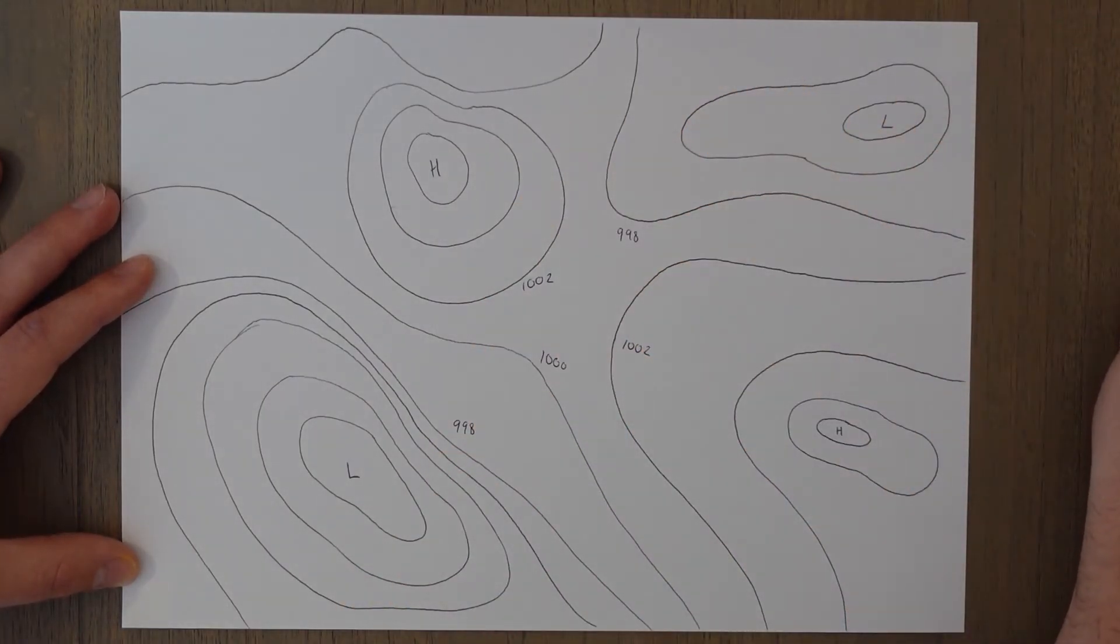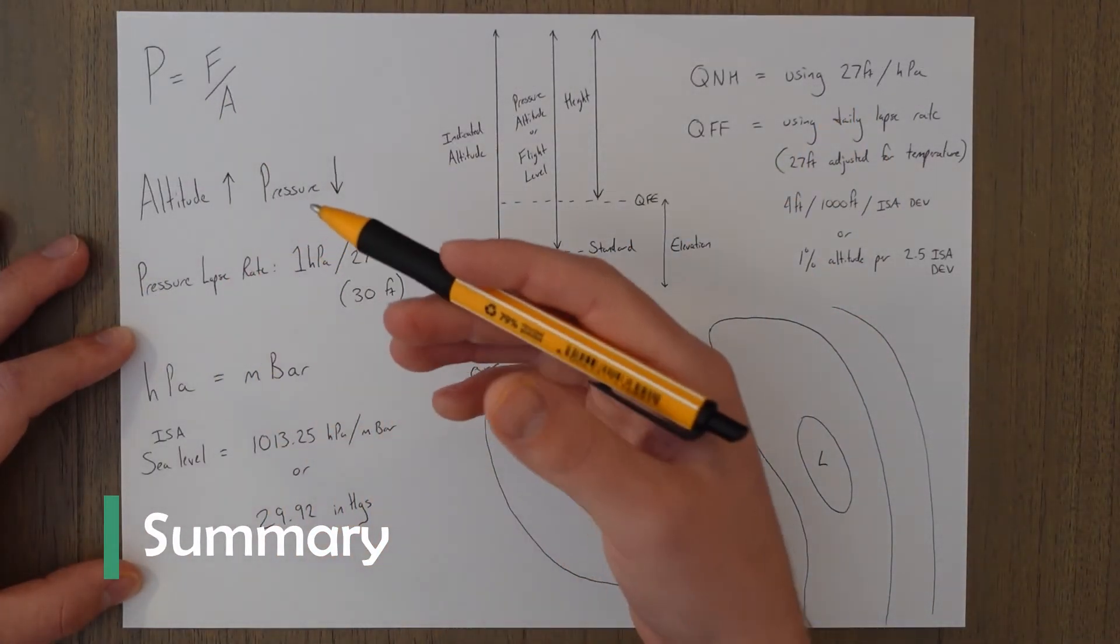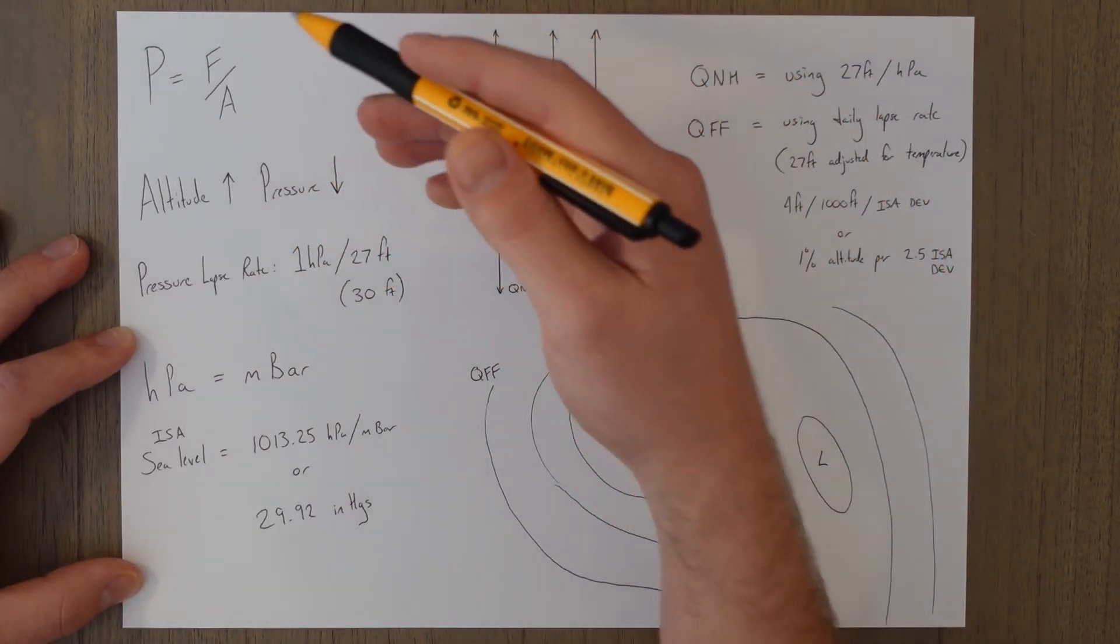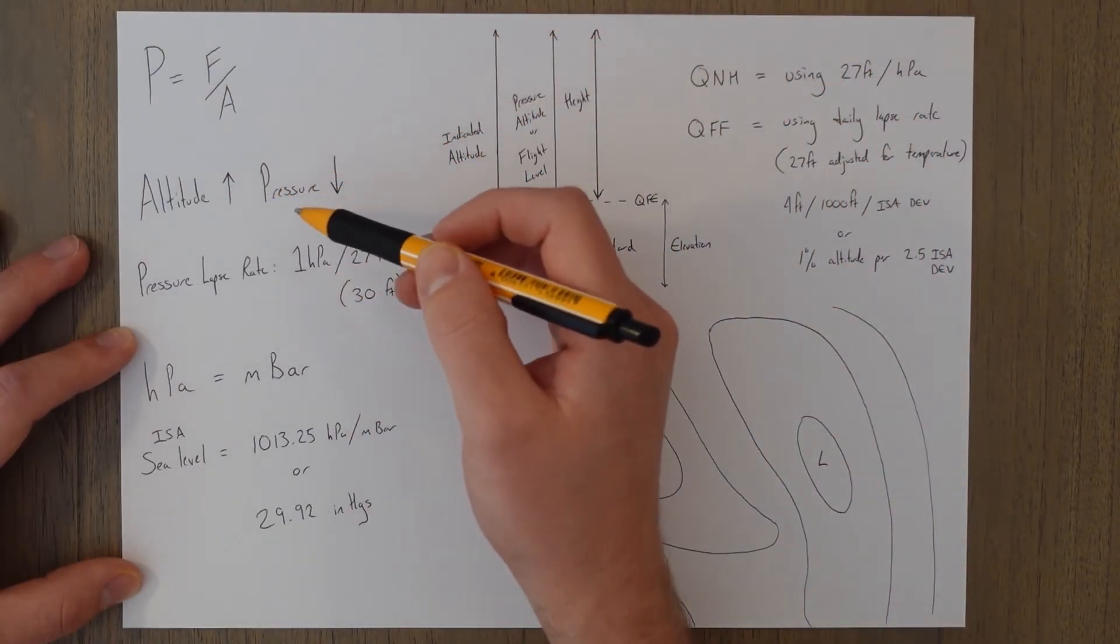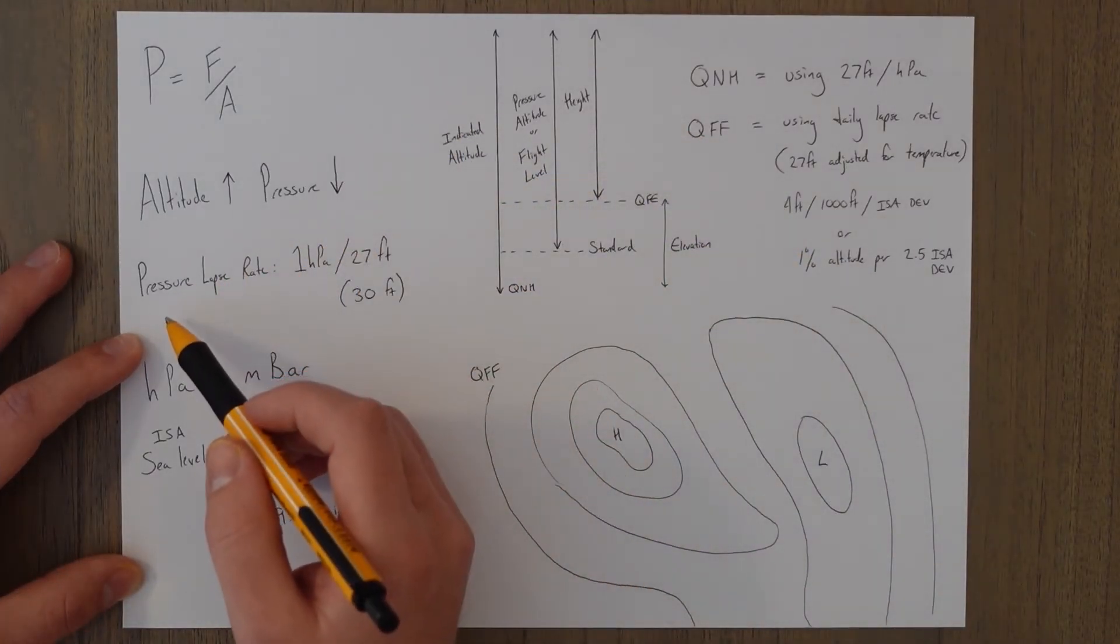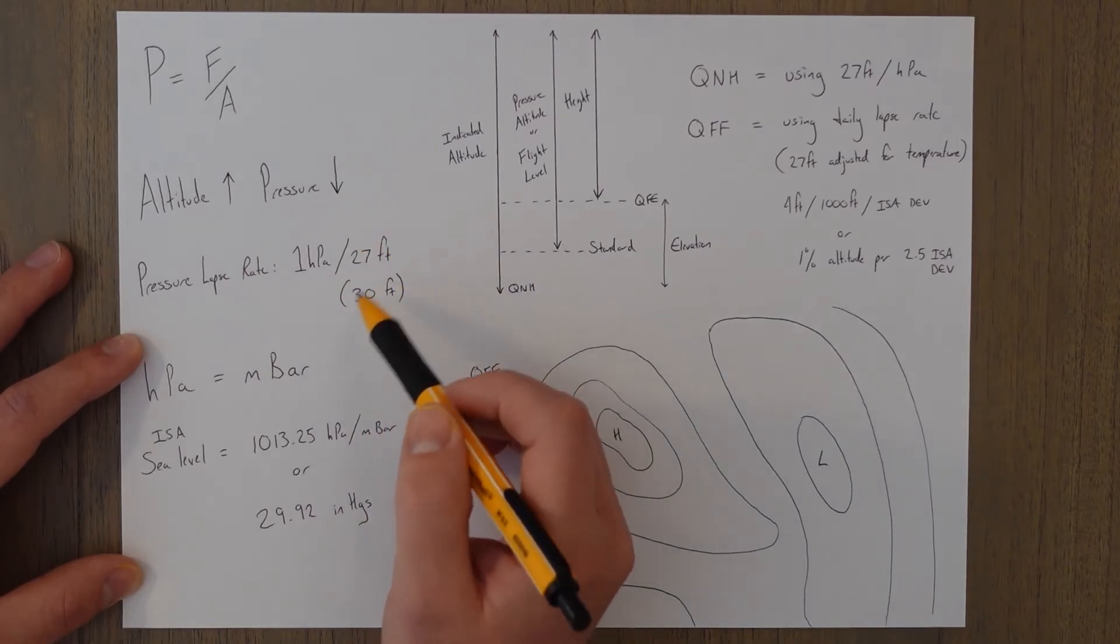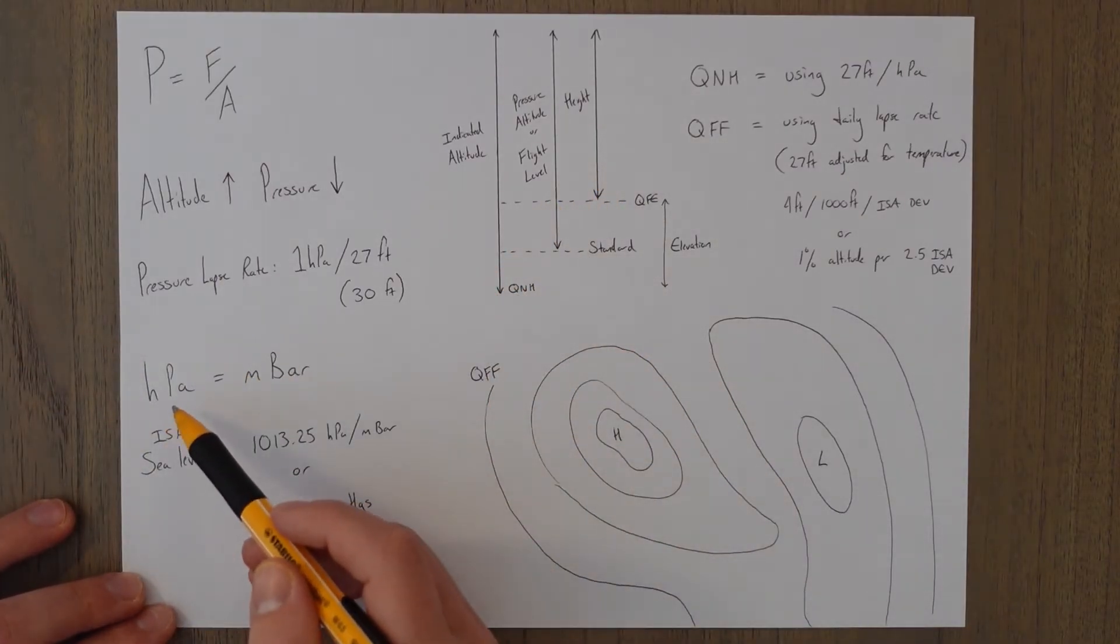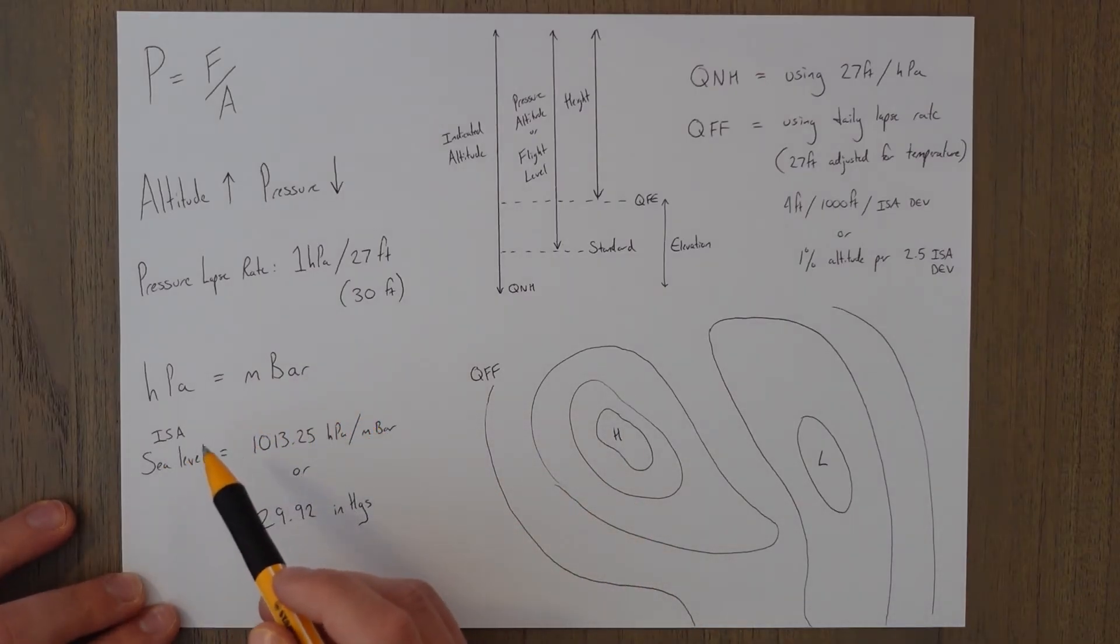To summarize then, pressure is the force over the area. And because we have fewer particles above us that means our weight is lower and our force is lower as we climb up through the atmosphere, so that means our pressure reduces. So as altitude increases, the pressure decreases. The rate at which this happens is one hectopascal drop for every 27 feet increase in altitude, or 30 feet for easy calculations. We measure pressure in hectopascals. One hectopascal is equivalent to one millibar.